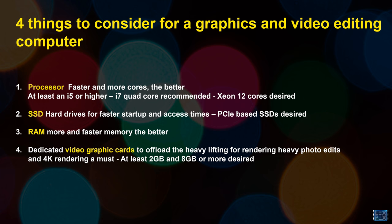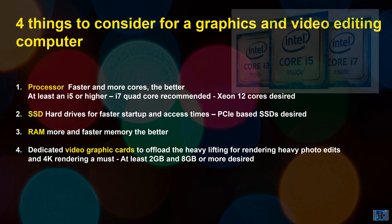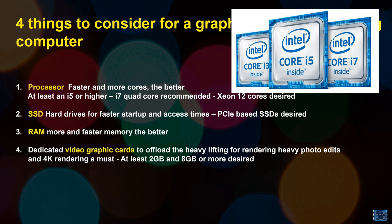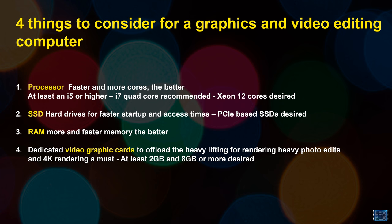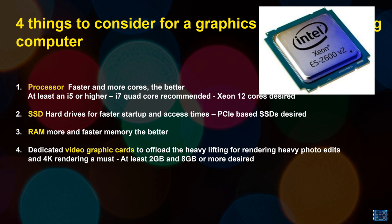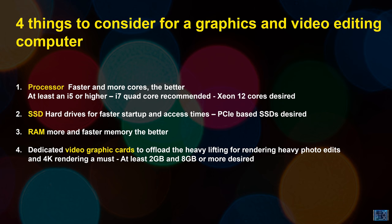We have four things to consider for a graphics and video editing computer, and this is going to apply to any platform. First is the processor — faster and more cores the better. I'd recommend at least an i5 or higher, i7 quad-core recommended, with 12 cores desired but they go up in price. The processor does most of the heavy lifting in terms of core processes; the video card offloads heavier workloads in video rendering and high-end graphics, but generally the processor takes the brunt of everyday heavy lifting.